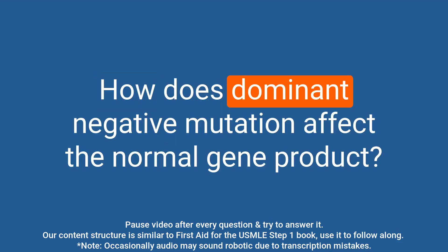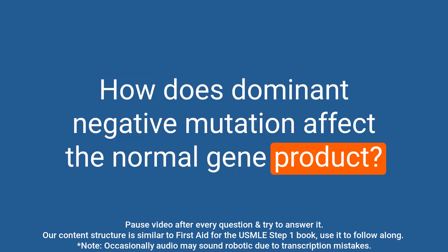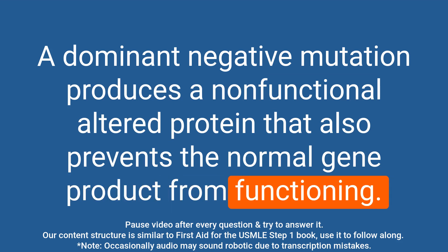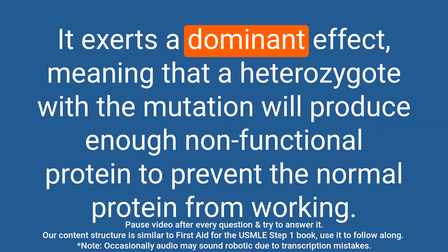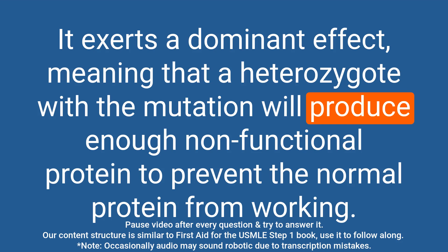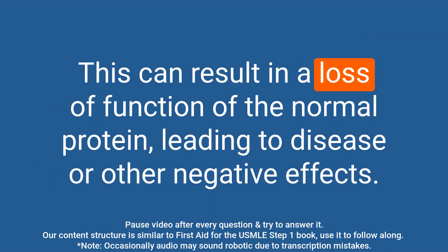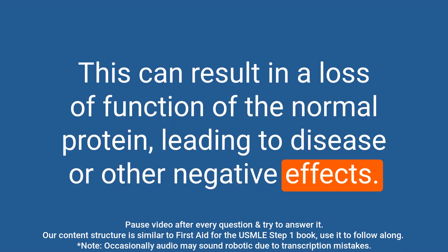Question: How does a dominant negative mutation affect the normal gene product? Answer: A dominant negative mutation produces a non-functional altered protein that also prevents the normal gene product from functioning. It exerts a dominant effect, meaning that a heterozygote with the mutation will produce enough non-functional protein to prevent the normal protein from working. This can result in a loss of function of the normal protein, leading to disease or other negative effects.